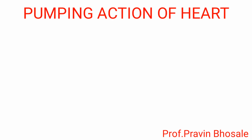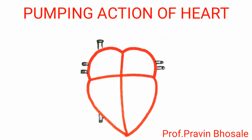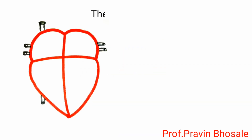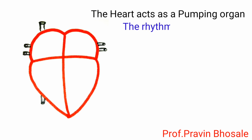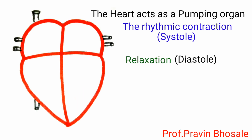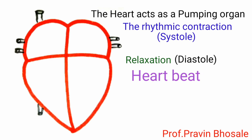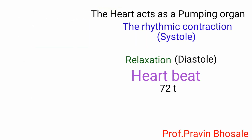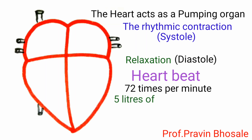Let us revise the pumping action of the heart. The heart acts as a pumping organ. The rhythmic contraction (systole) and relaxation (diastole) of the heart is called heartbeat. The heart beats about 72 times per minute and pumps about 5 liters of blood per minute.